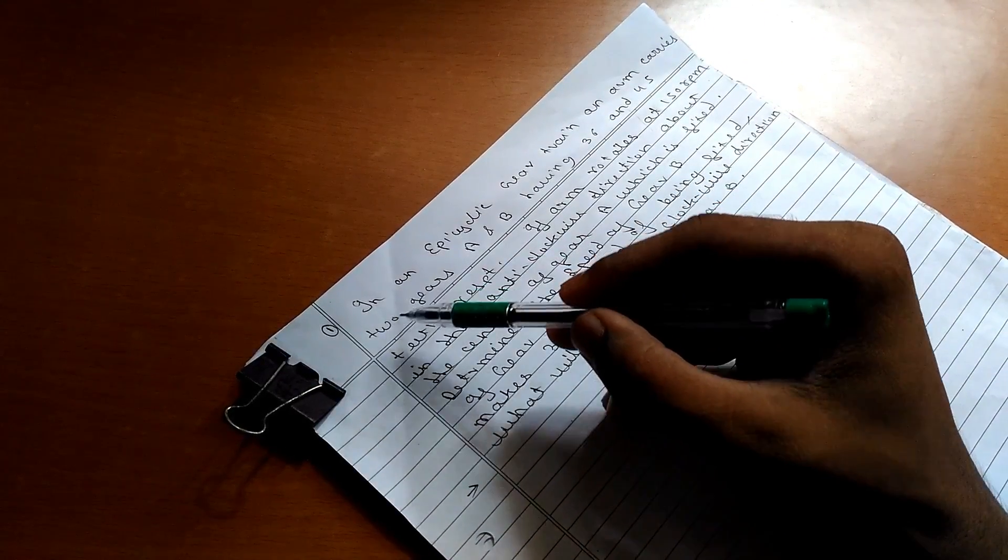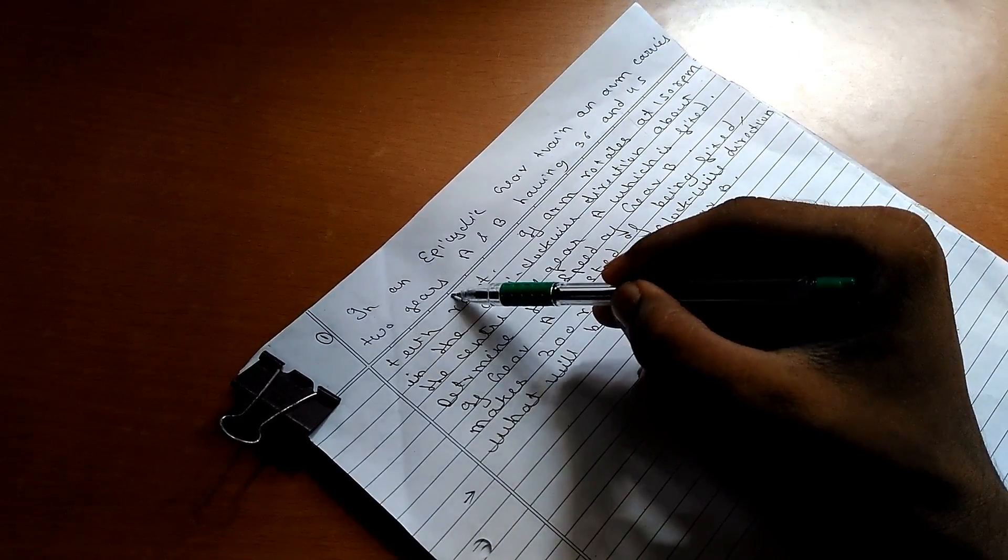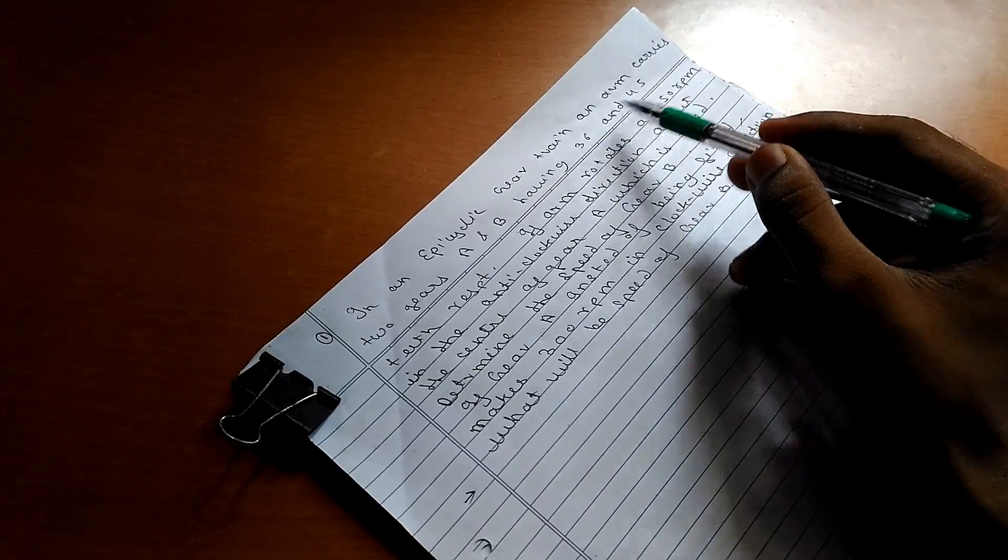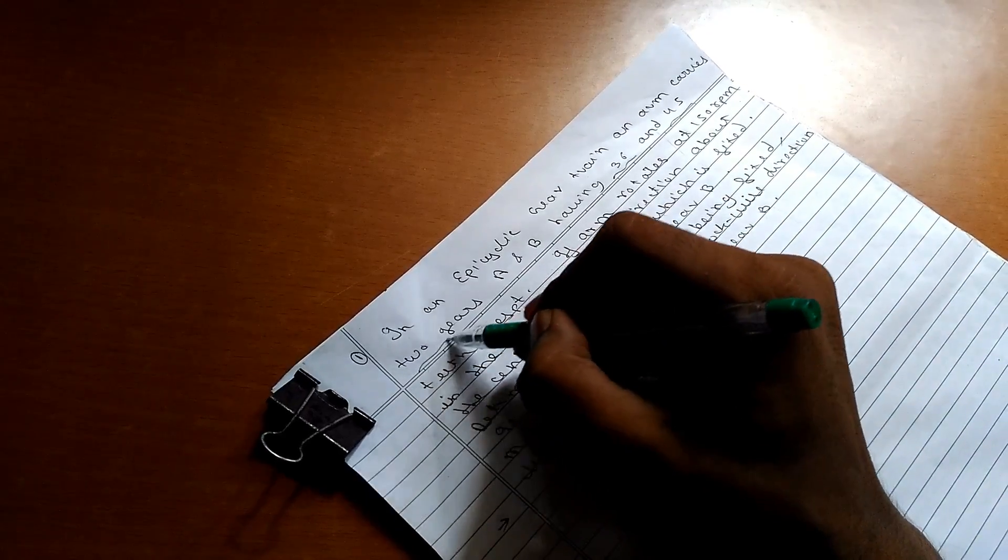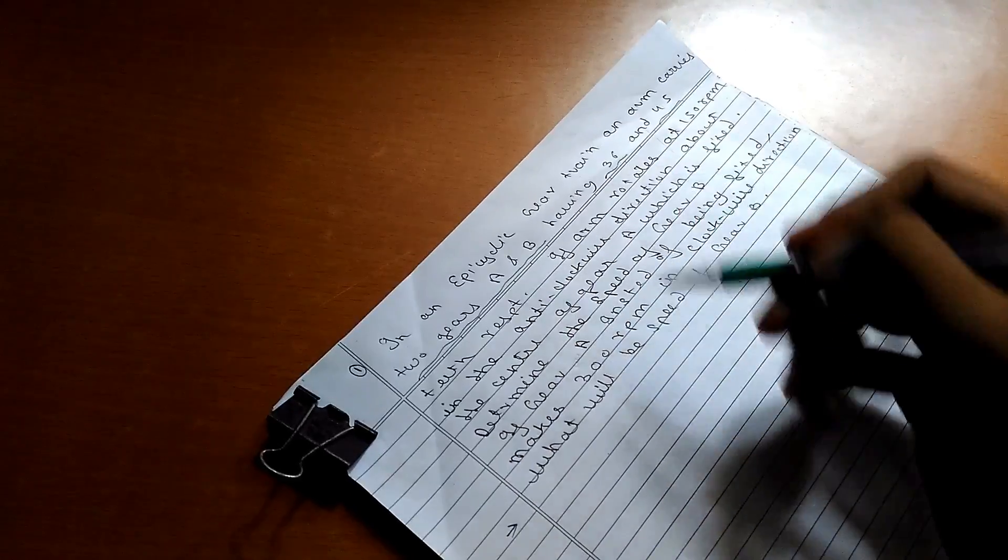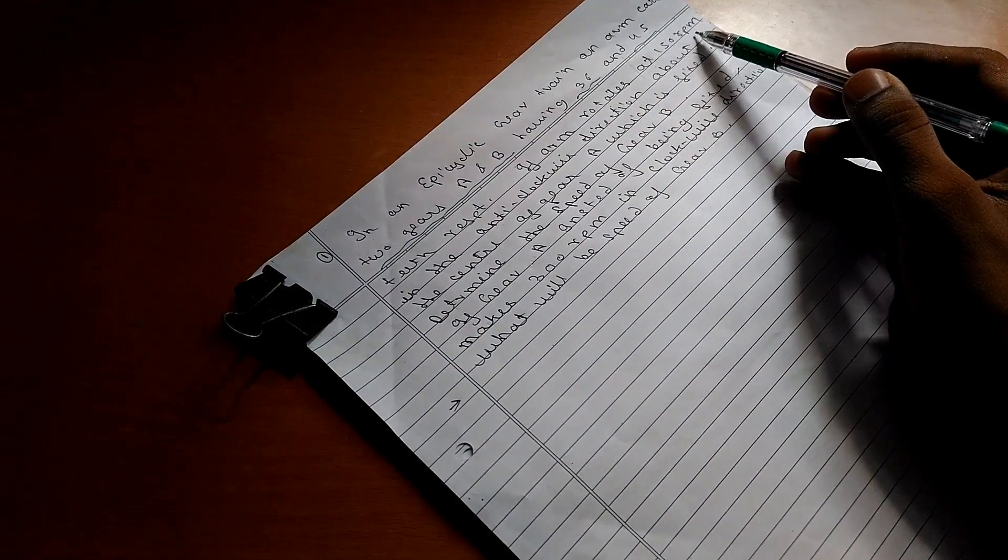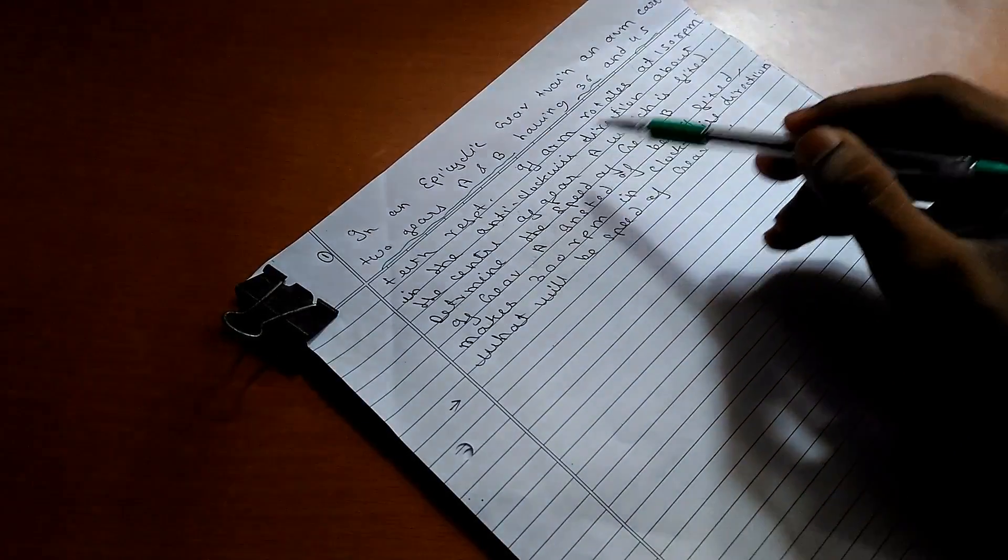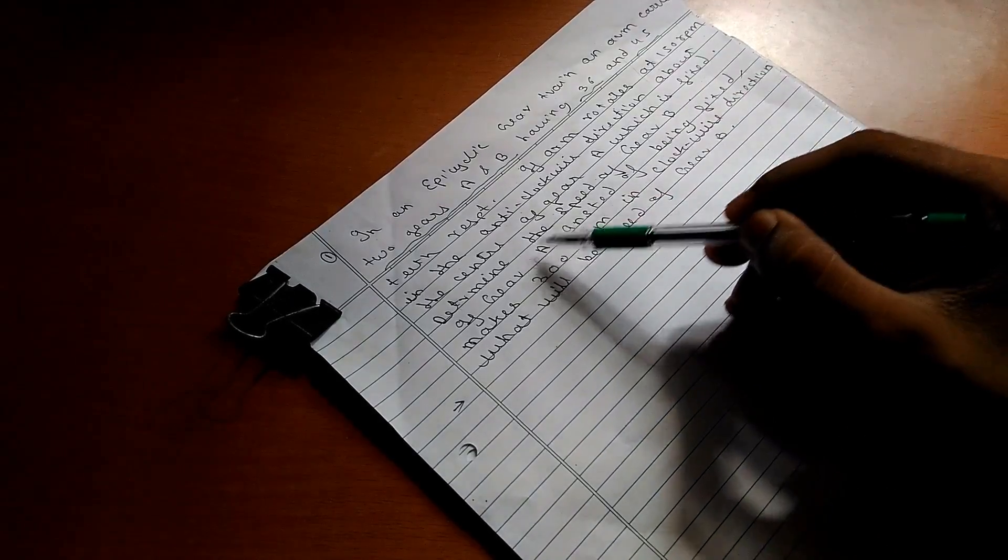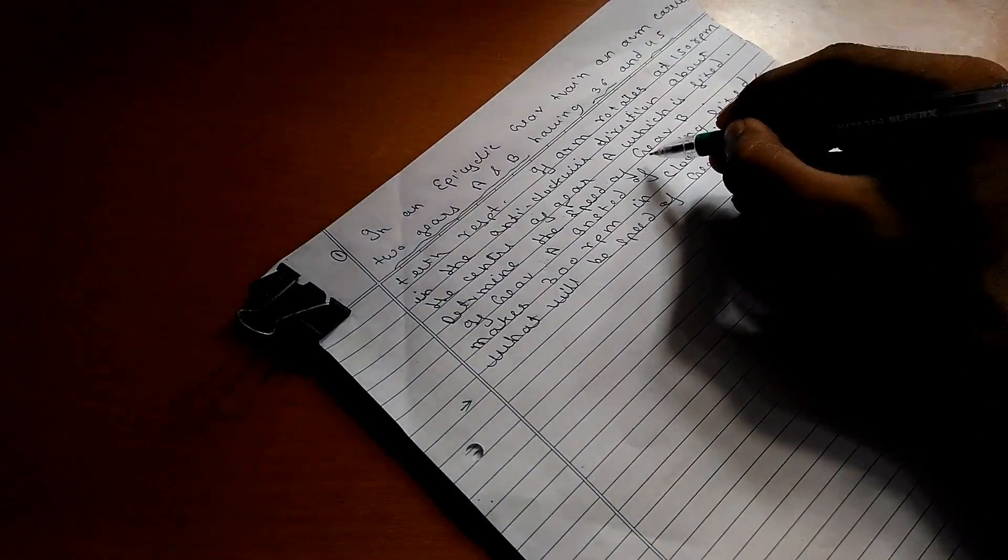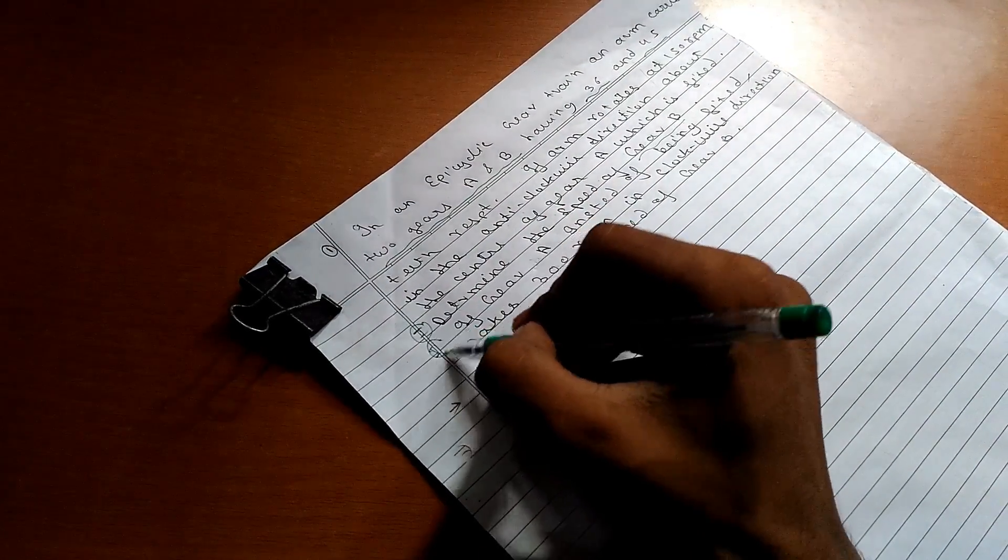So now this is what the question is. In an epicyclic gear train, an arm carries two gears A and B having 36 and 45 teeth respectively. If the arm rotates at 150 RPM in the anti-clockwise direction about the center of gear A which is fixed, determine the speed of gear B. This is the first condition.